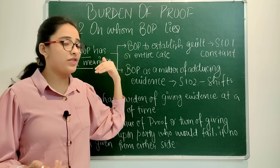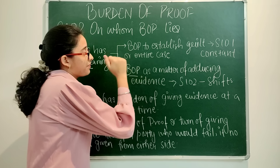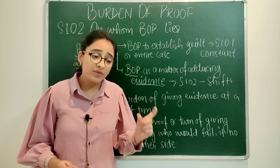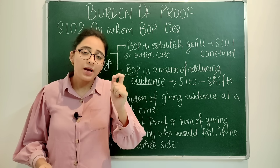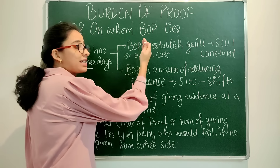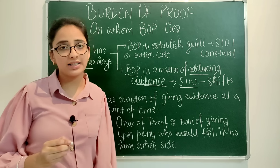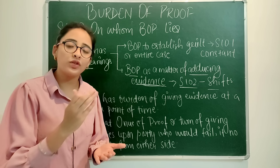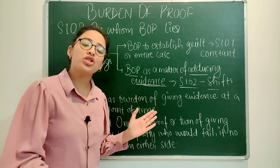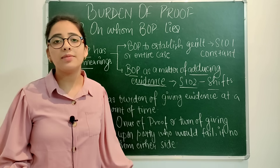The party bringing the case in their favor bears this burden of proof. But there is another burden of proof called onus of proof — it is the burden of proving as a matter of adducing evidence, meaning which party has the burden of giving evidence at a particular point of time. Here onus of proof is discussed — whose burden is it and for what? It is not about proving the entire case. The burden of giving evidence — this is temporary and it keeps constantly moving.